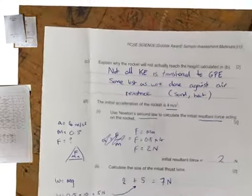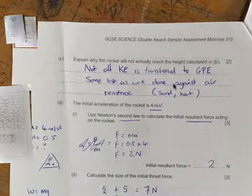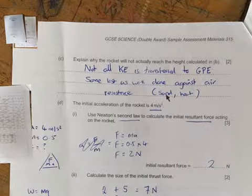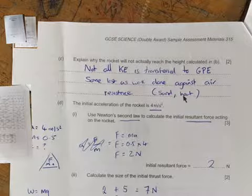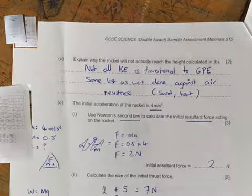Let's move that up there. And then part C of this question, explain why the rocket will not actually reach this height, because not all the kinetic energy is transferred to gravitational potential energy. Some of it's lost as work done against the air which is sound, it'll make a sound. There will be friction and heat up, so against air resistance there. So two marks, it's not all going to be converted.